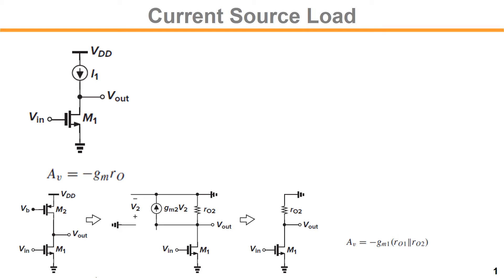For a current source amplifier with a current source load, the output resistance is the self-output resistance from M1. The overall gain for input variation VIN: if you raise the voltage on the gate, the current will increase on the drain and source, ID will increase, and that current can only flow through there. The voltage drop happens there, so V_out equals minus GM times RO.